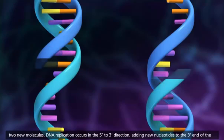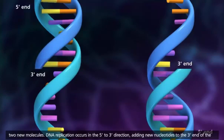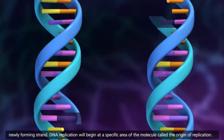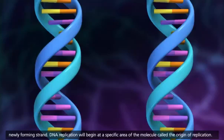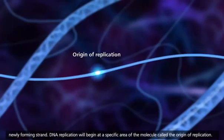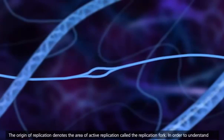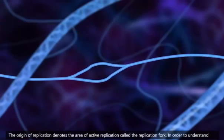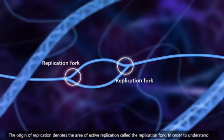DNA replication occurs in the 5' to 3' direction, adding new nucleotides to the 3' end of the newly forming strand. DNA replication will begin at a specific area of the molecule called the origin of replication. The origin of replication denotes the area of active replication called the replication fork.